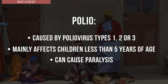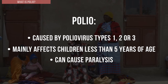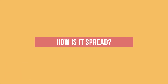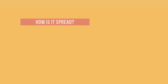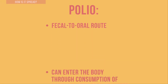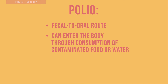Nerve cells that control the muscles. How is polio spread? Polio virus spreads by the fecal to oral route. In areas with poor sanitation, it can enter the body through the mouth when people eat food or drink water that